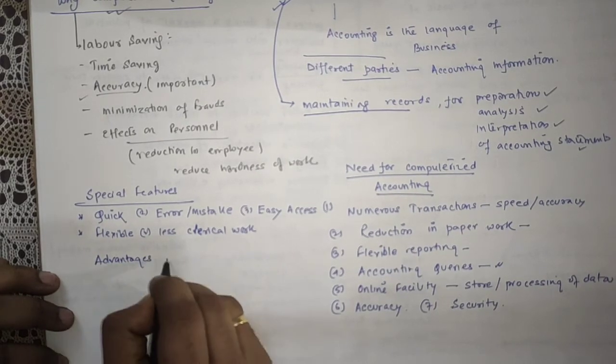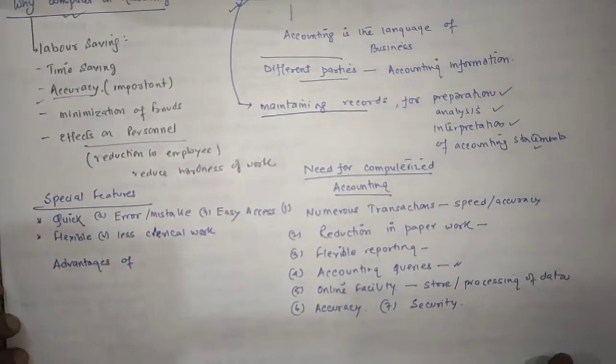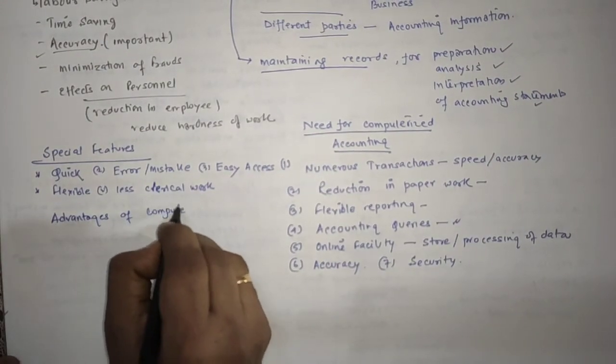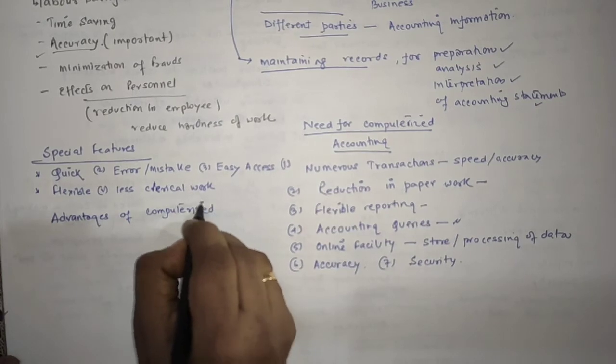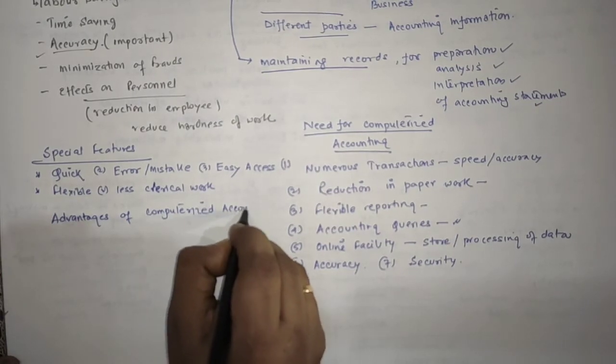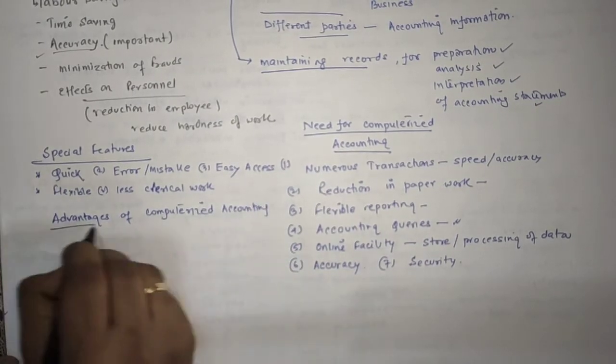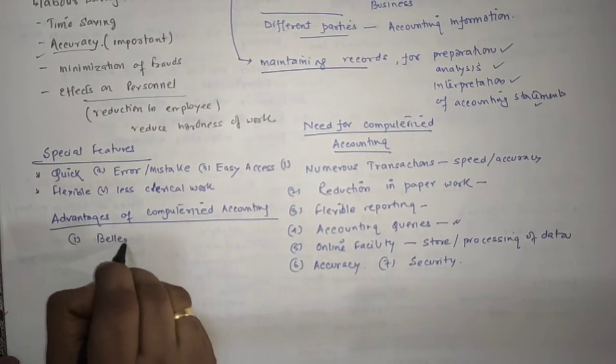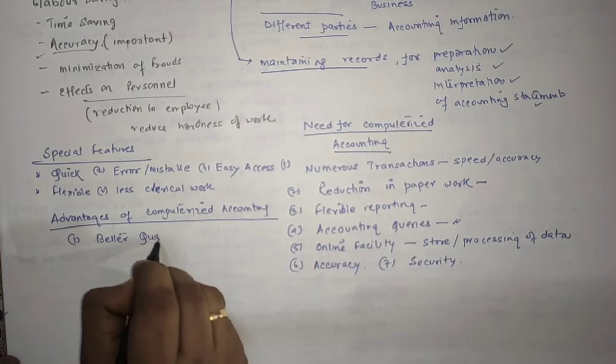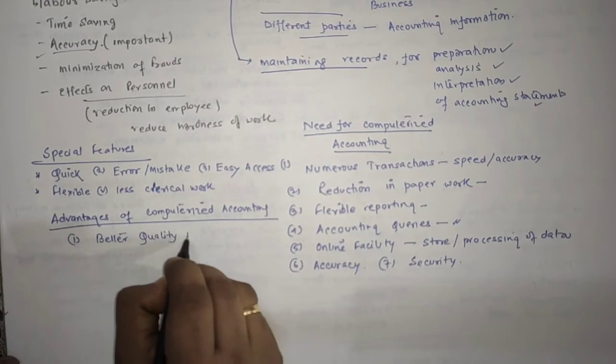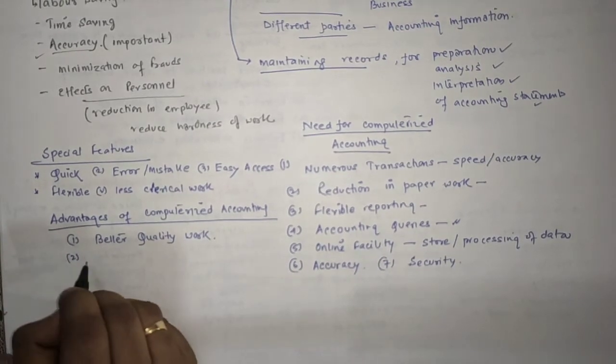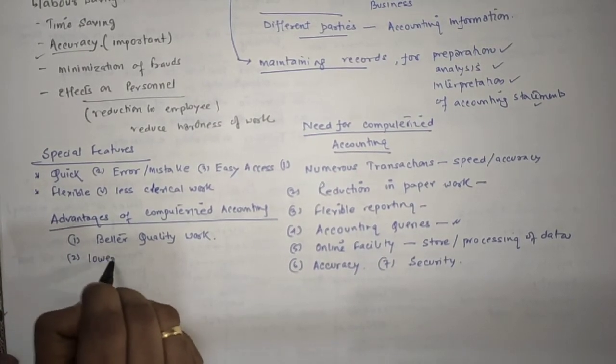Now let us come to the advantages of computerized accounting. Number one, better quality work because less errors will be there. Then lower operating cost.